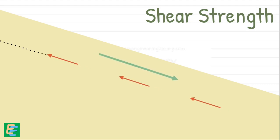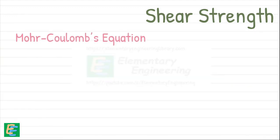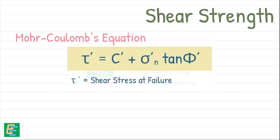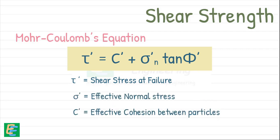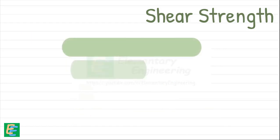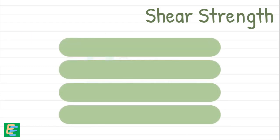The shear strength of the soil is given by Mohr-Coulomb theory as: τ' (tau dash) is the shear stress at failure, σ' (sigma dash) is effective normal stress, c is the effective cohesion between the particles, and φ (phi) is the effective angle of shearing resistance.